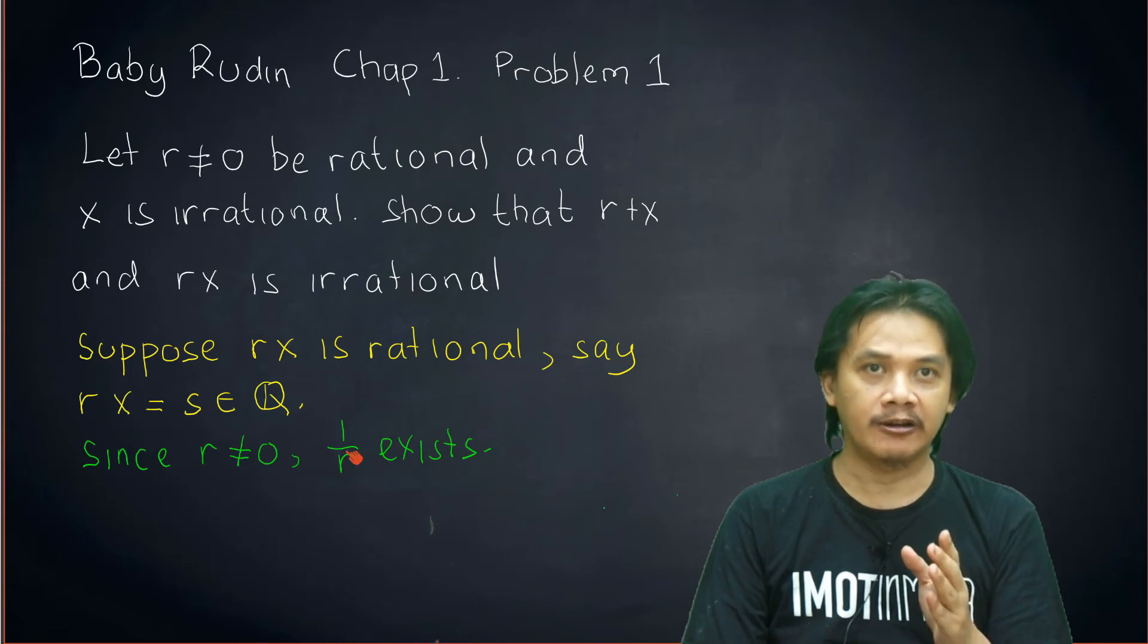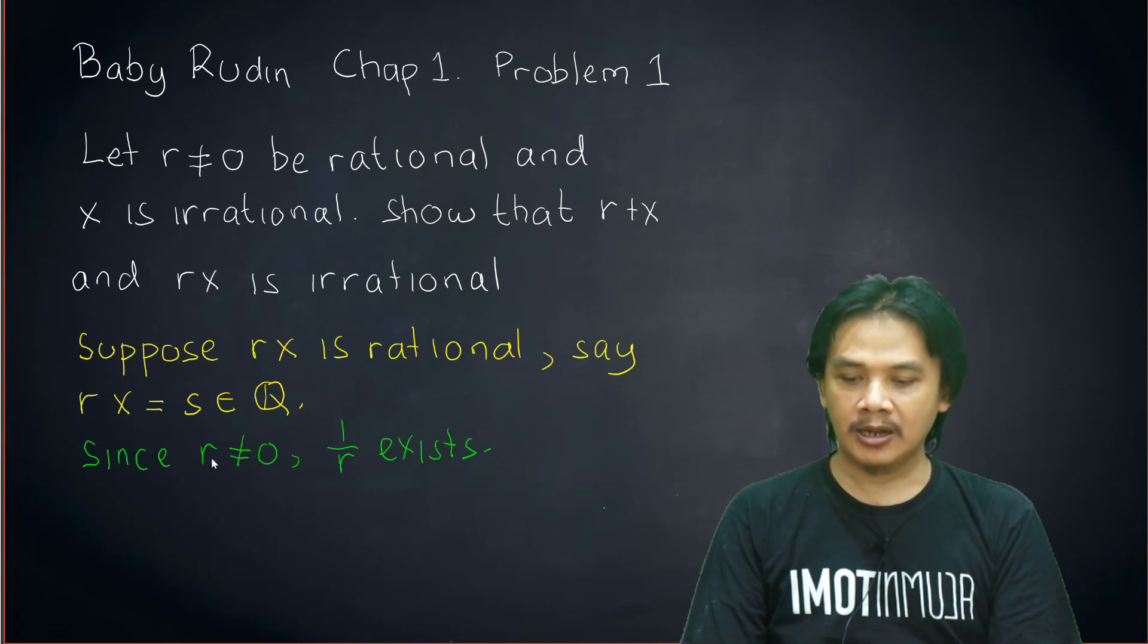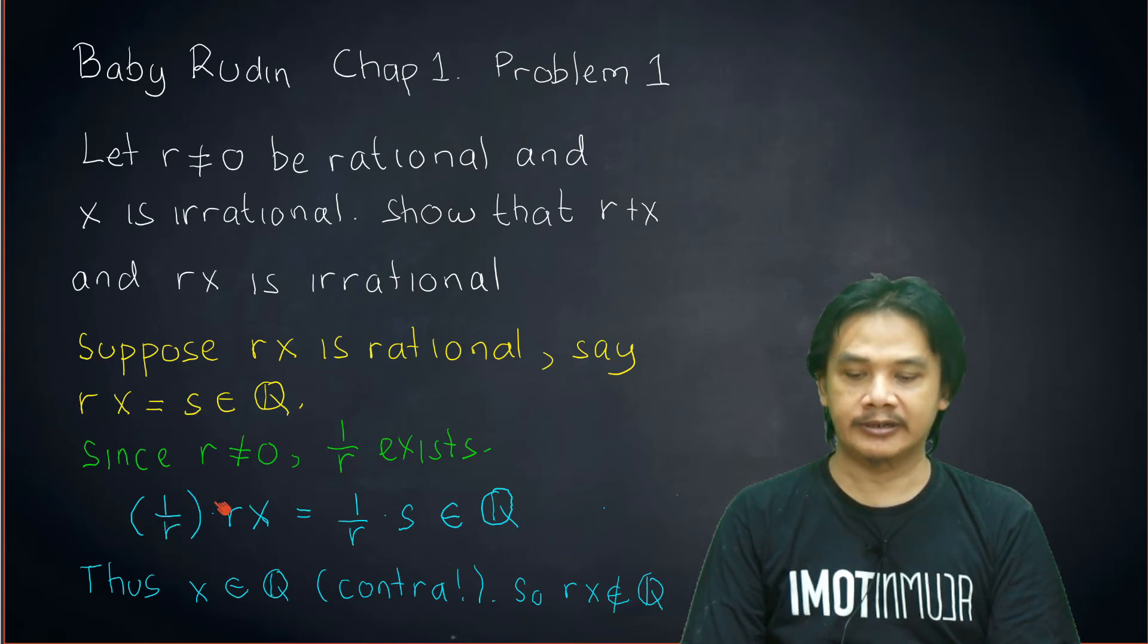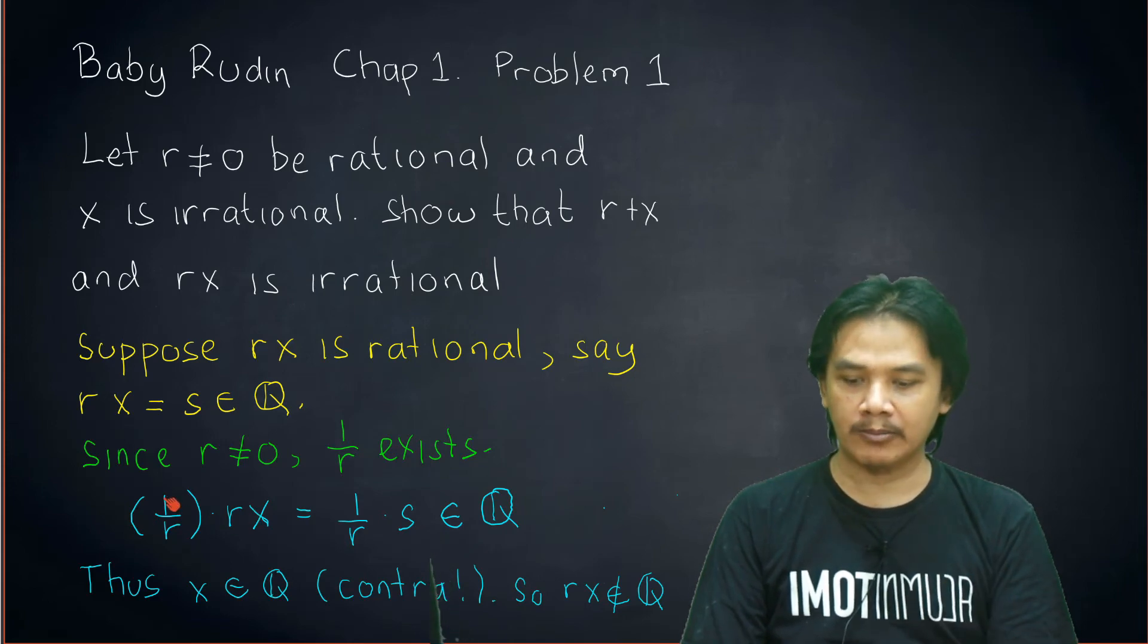The identity element of the multiplication. So now, similar to what we did, we're going to multiply the left-hand side and the right-hand side of this equation by 1/r. Multiply by 1/r on the left, and also the right-hand side we'll multiply by 1/r. Now since multiplication is associative, we can multiply 1/r with r first. And what do we get? We get 1 here.